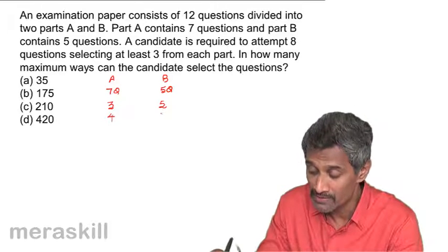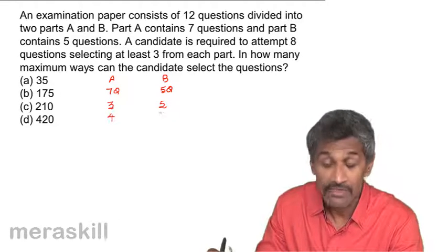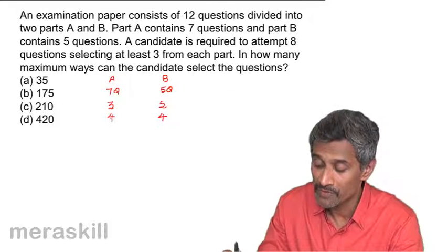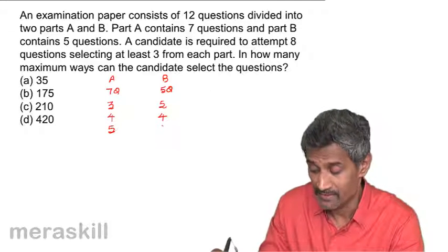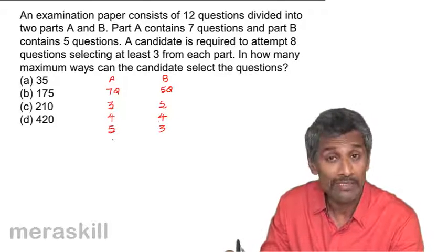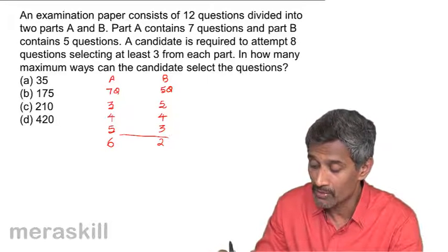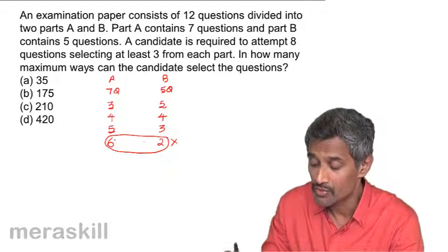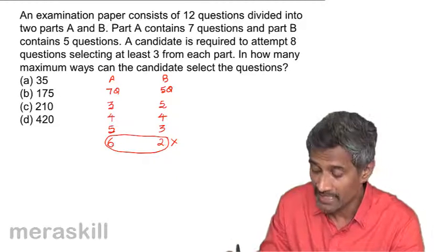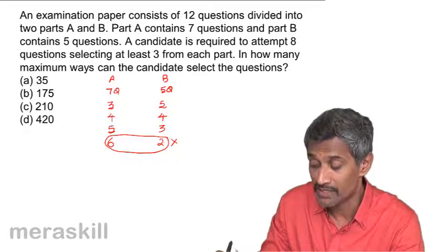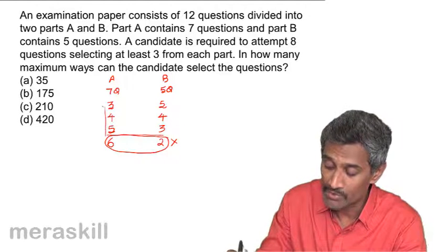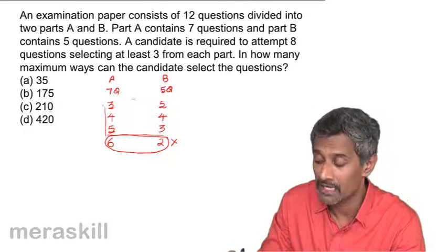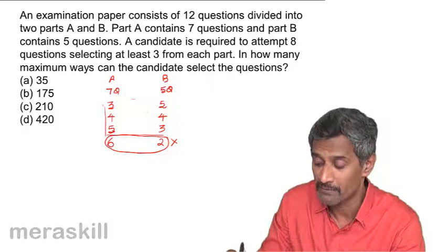The other possibility is he could choose four from Part B, and since the total is eight, he chooses four from Part A as well. Or he could choose five from Part B, in which case he takes three from Part A. If he chose six from Part A and two from Part B, that's invalid because Part B would have less than the minimum of three. So the valid possibilities are: three from A and five from B, four from A and four from B, or five from A and three from B.